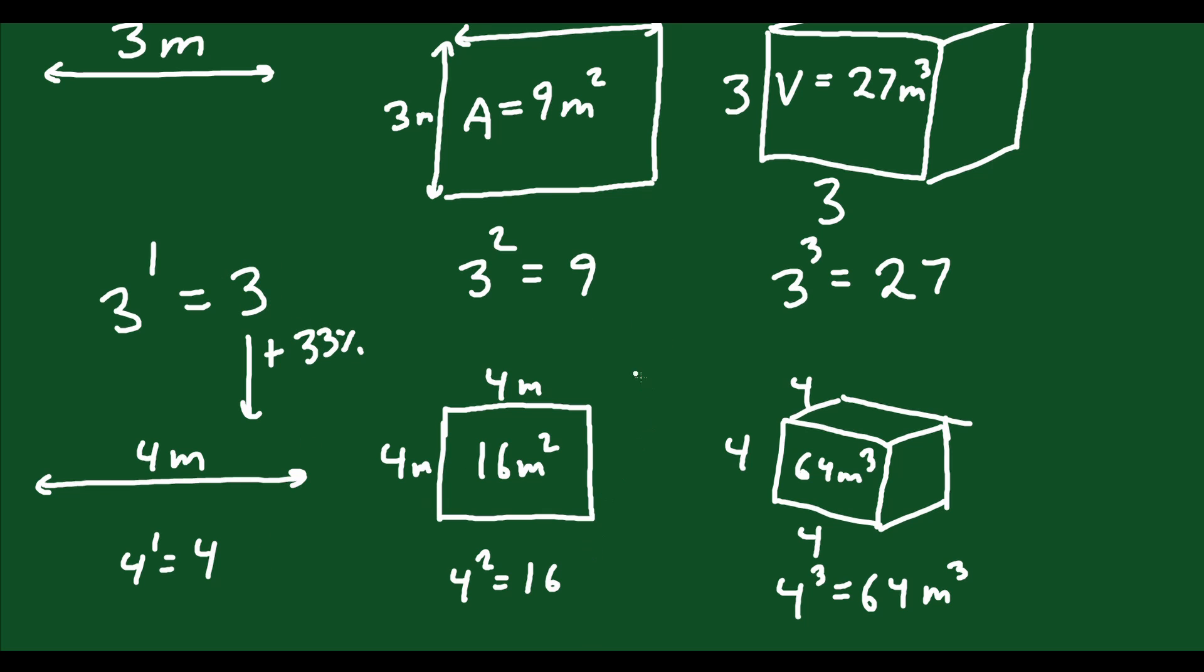For the area, from 9 to 16, that's an increase of 78 percent. It almost doubled, it's almost 100 percent because if you double 9 you get to 18. So we're close to doubling. And if you go from 27 to 64 that's an increase of 137 percent.